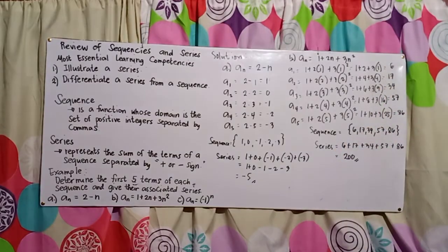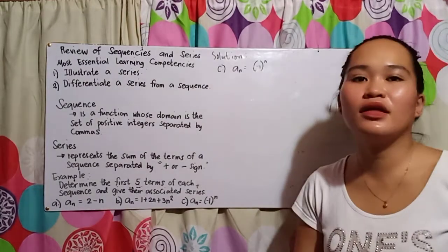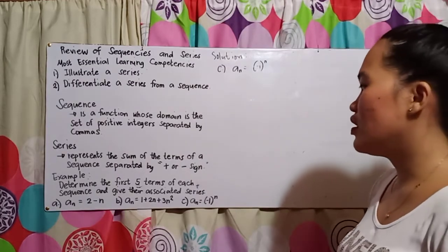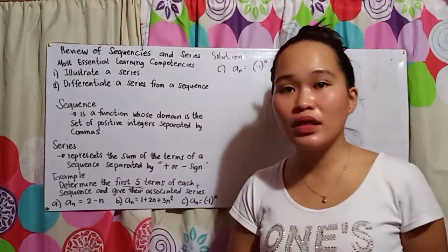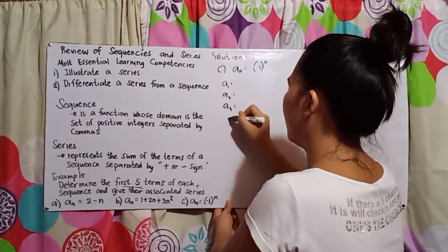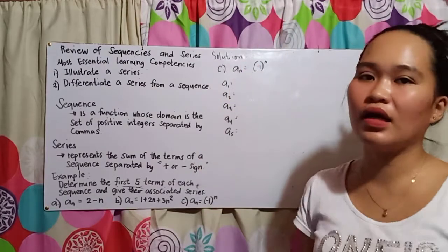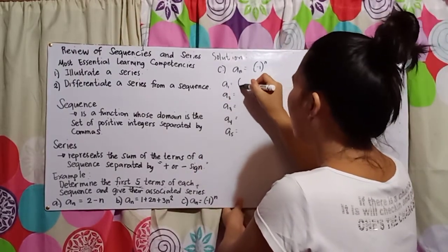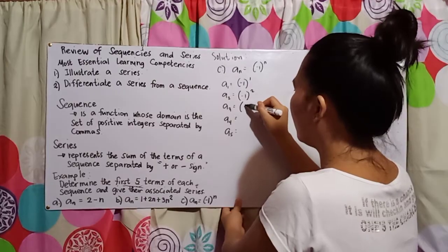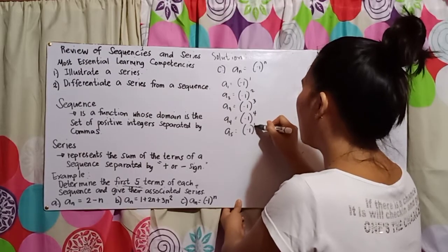Now let's proceed to the solution for letter C. The given is a sub n equals negative 1 raised to the power of n. Since we need the first five terms, we solve from a sub 1 to a sub 5, substituting values into the formula: negative 1 to the power of 1, negative 1 to the power of 2, negative 1 to the power of 3, negative 1 to the power of 4, and negative 1 to the power of 5.